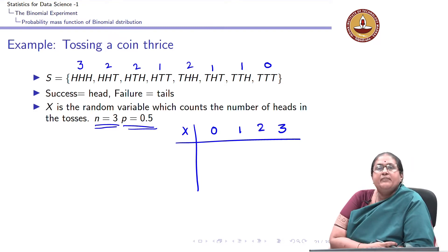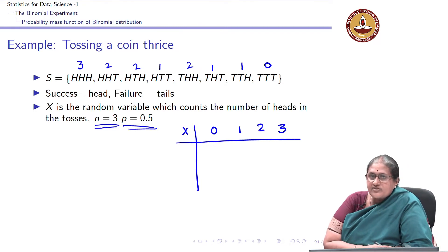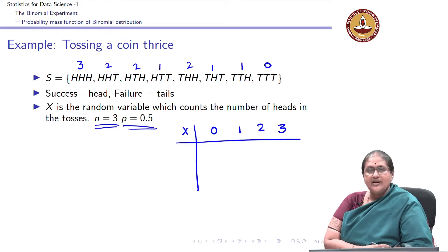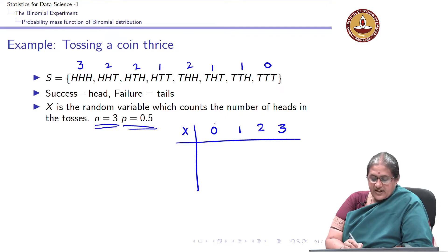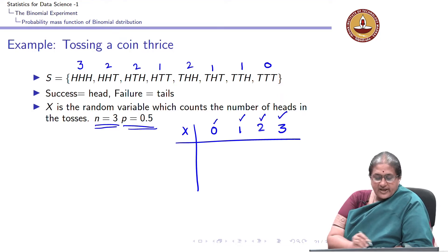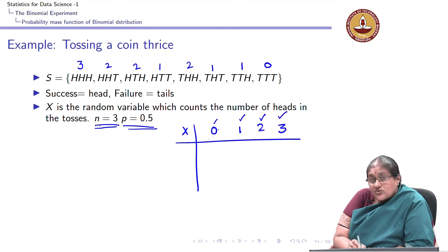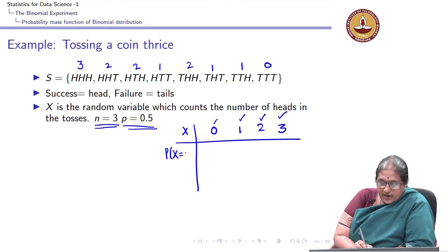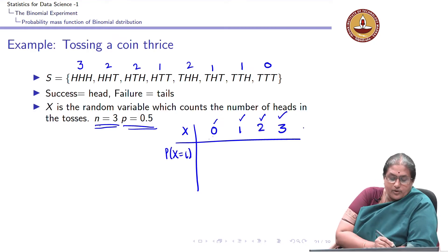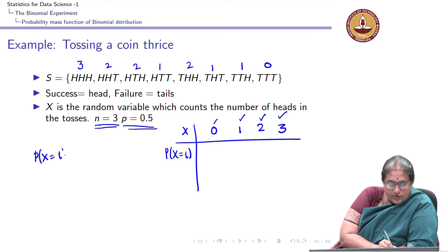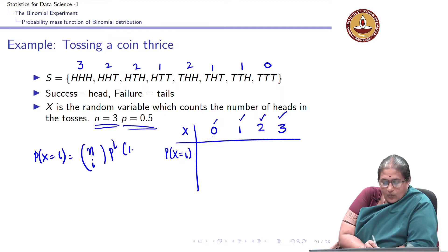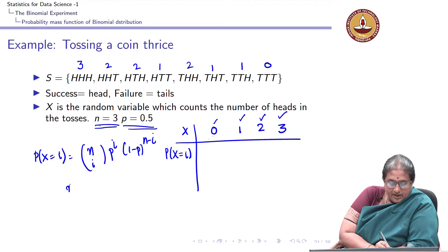My random variable, which is counting the number of successes equivalent to counting the number of heads, takes the values 0, 1, 2, and 3. Since n equals 3, it is a binomial random variable taking values 0, 1, 2, and 3. Let us apply the formula to find the probabilities. Recall P(x = i) = n choose i times p to the i times (1 minus p) to the (n minus i). Here n is 3 and p is one half.